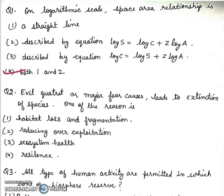Question 2: Evil quartet or major four causes leads to extinction of species. One of the reason is: First, habitat loss and fragmentation. Second, reducing over-exploitation. Third, ecosystem health. Fourth, resilience. Right answer will be habitat loss and fragmentation.